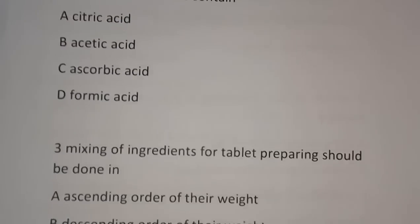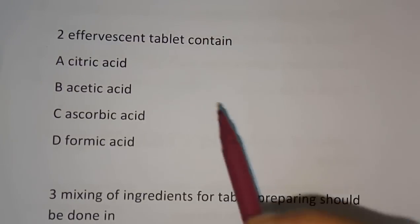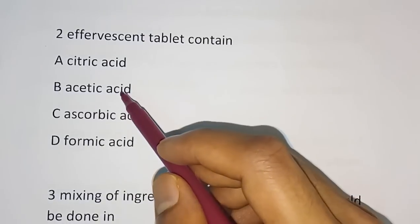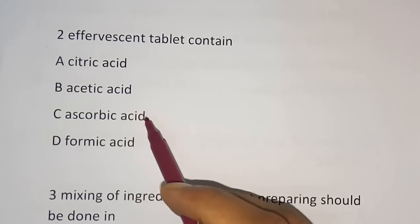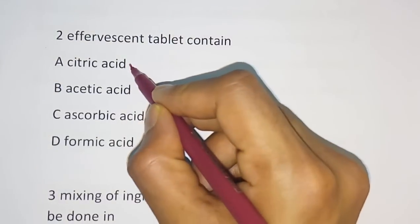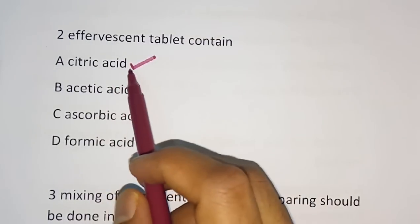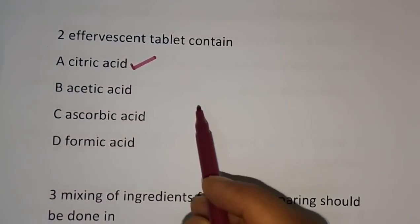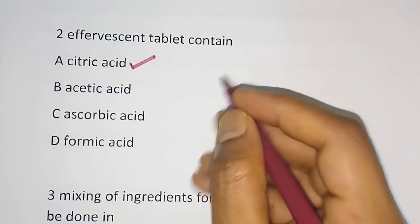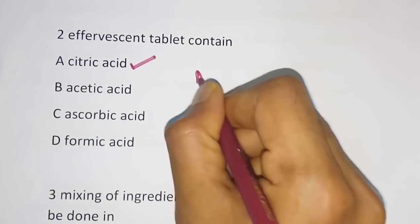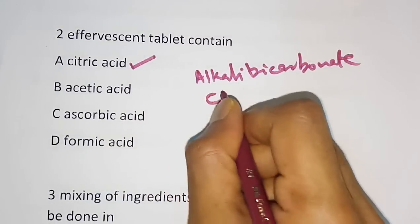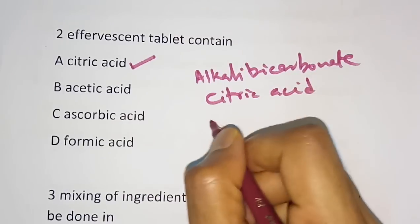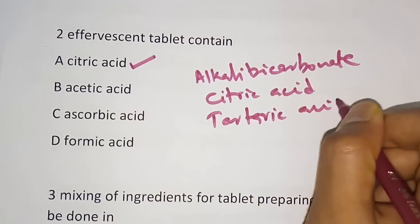Question number 2: Effervescent tablets contain which acid? Options are citric acid, acetic acid, ascorbic acid, and formic acid. The correct answer is citric acid. The main ingredients of an effervescent tablet are sodium bicarbonate (alkali bicarbonate), citric acid, and tartaric acid.